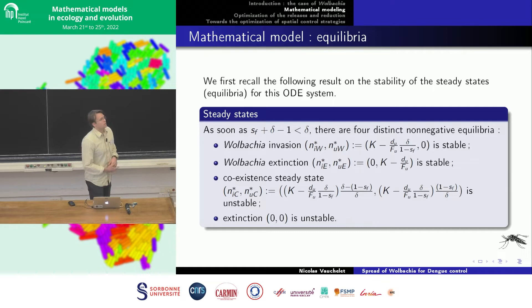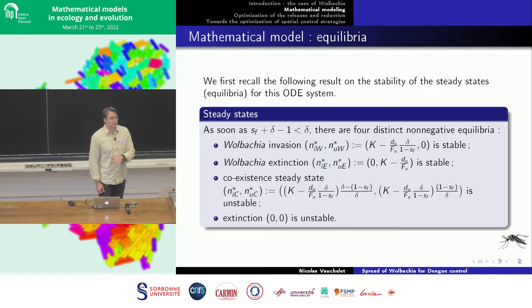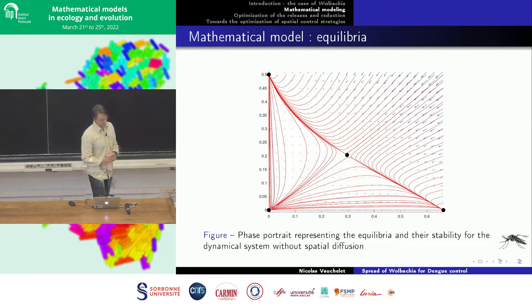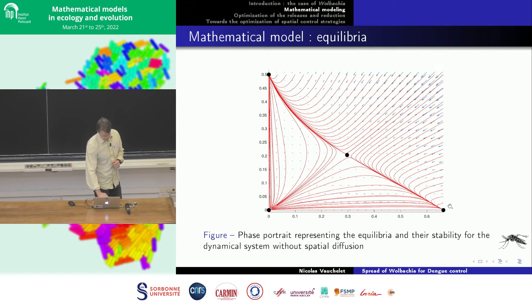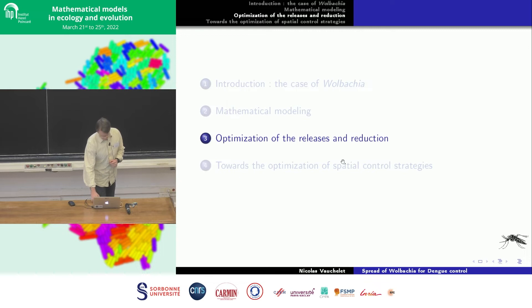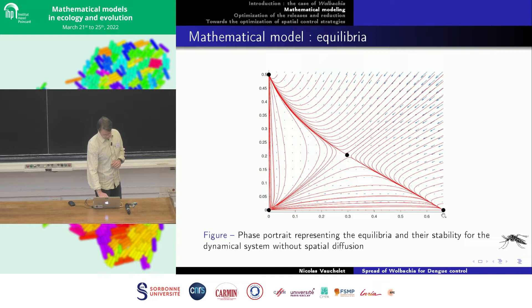This simple model has four equilibria. Two are stable: the Wolbachia invasion equilibrium (everyone carries Wolbachia) and the Wolbachia extinction equilibrium (no one carries Wolbachia). There is also an unstable co-existence steady state and an unstable extinction state. Looking at the phase portrait, all trajectories converge either to the Wolbachia extinction at the bottom or the Wolbachia invasion at the top. The question is: starting from the natural Wolbachia-free equilibrium, how do we make optimized releases to transition to the invasion equilibrium?